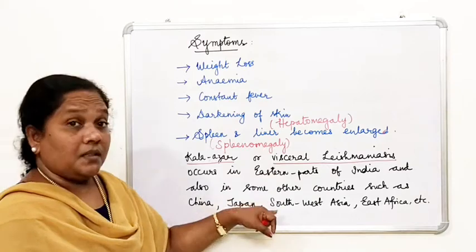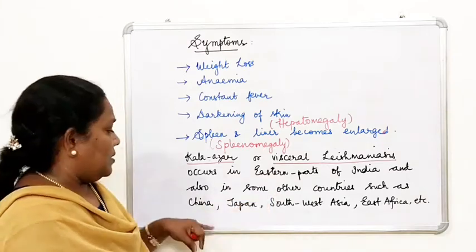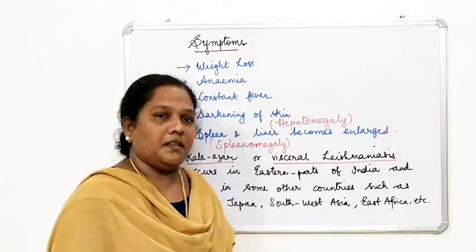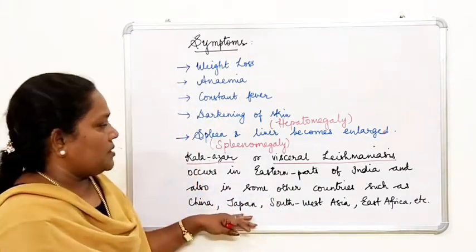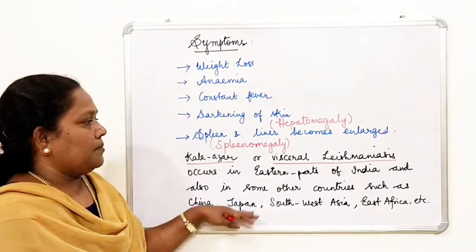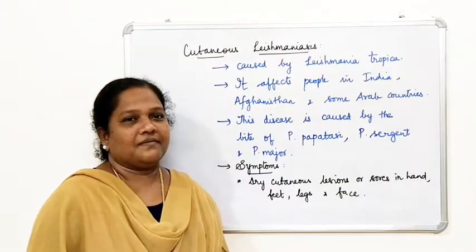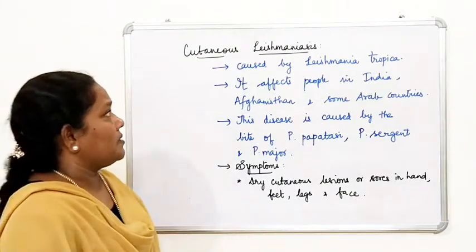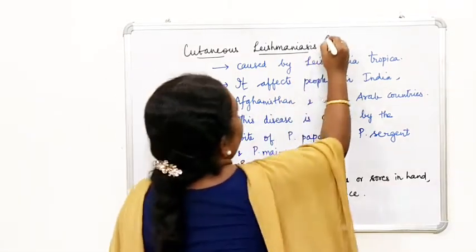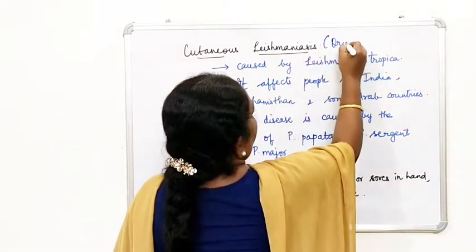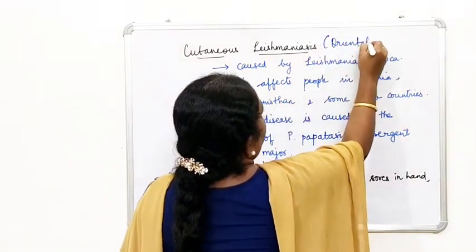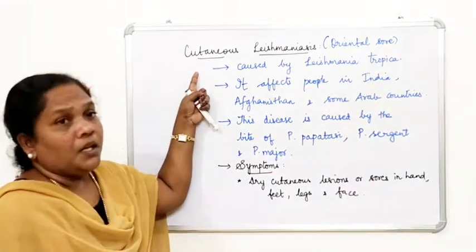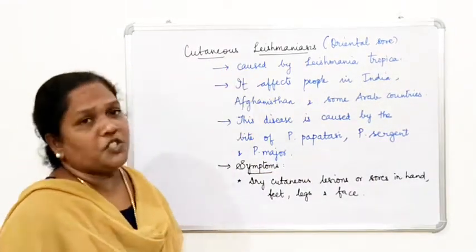Visceral leishmaniasis occurs in the eastern parts of India and in other countries including China, Japan, Southwest Asia, and East Africa. Many countries are affected by leishmaniasis.